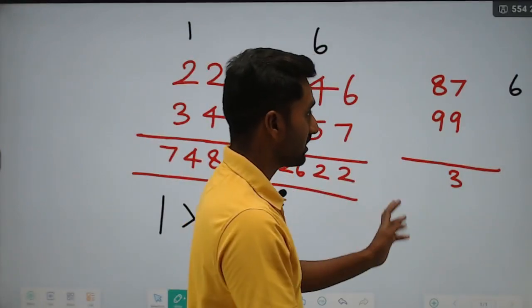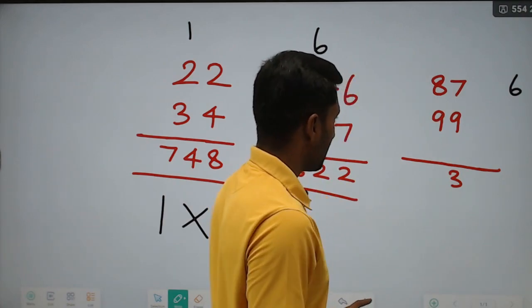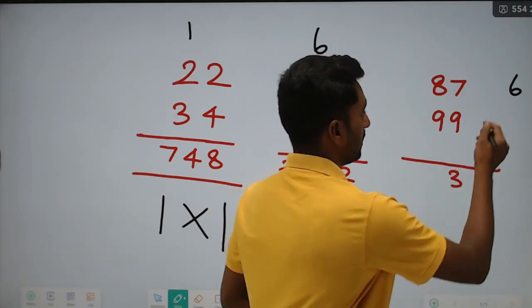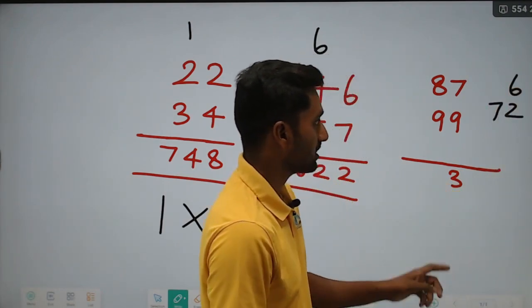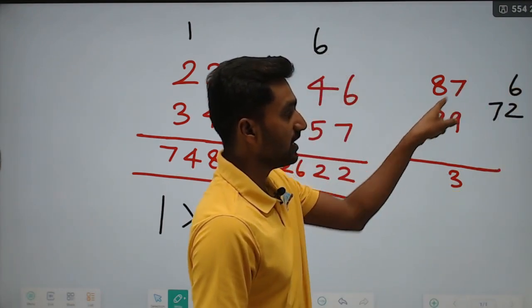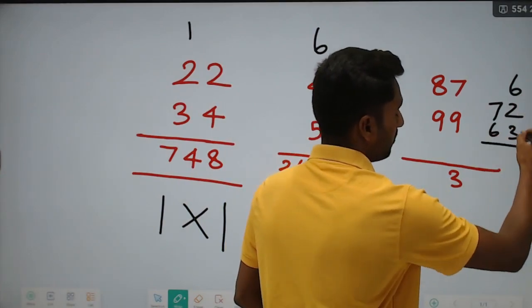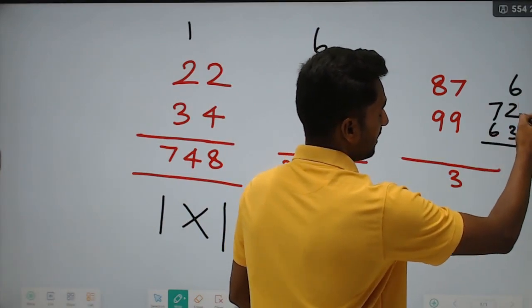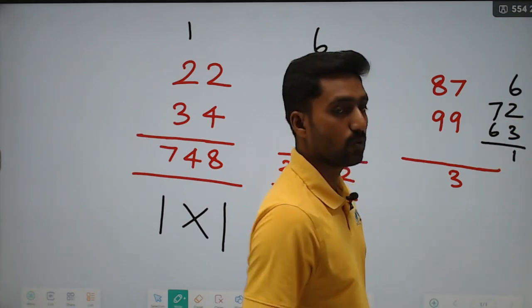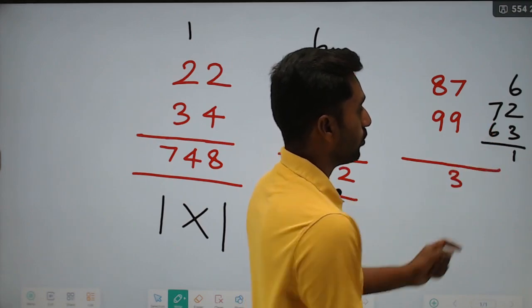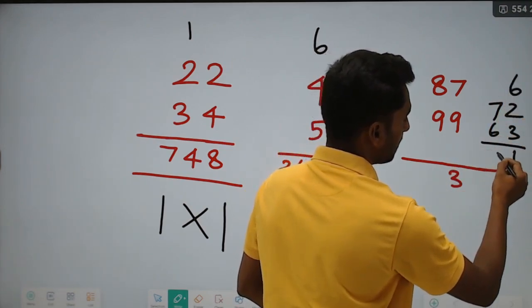Next cross: 8 into 9 is equal to 72, plus 9 into 7 is 63. How much are we getting? 72 plus 63: the units digit gives 8 plus 3 is 11, write 1, carry 1. Then 7 plus 6 is 13, plus already carry 1 is 14.